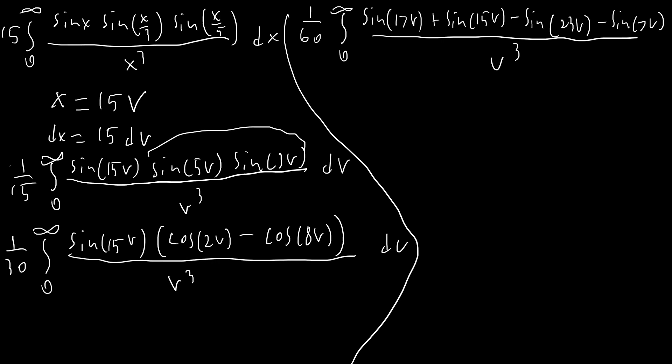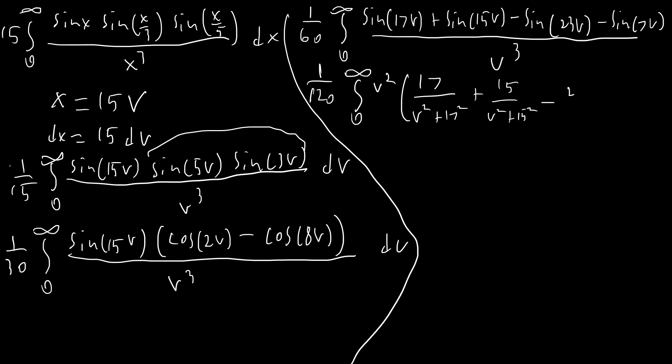We apply the mass identity: the inverse Laplace transform of 1/v³. Since the Laplace transform of t² is 2/s³, the inverse Laplace transform of 1/s³ is t²/2, giving a factor of 1/120. The Laplace transforms on top give: 17/(v²+17²) + 13/(v²+13²) minus 23/(v²+23²) minus 7/(v²+49).